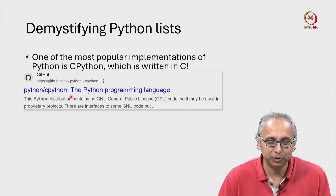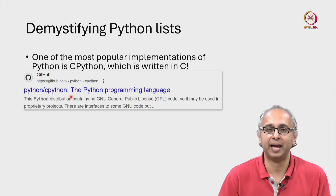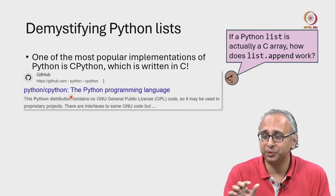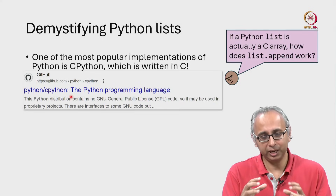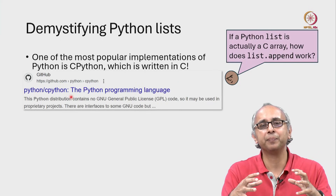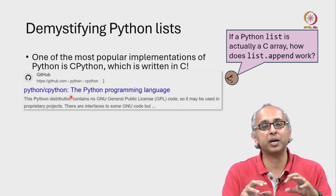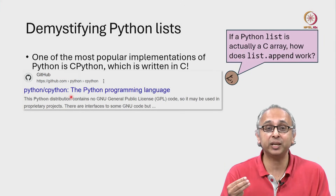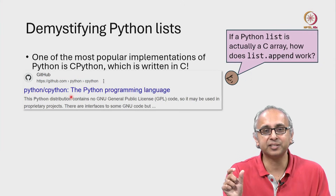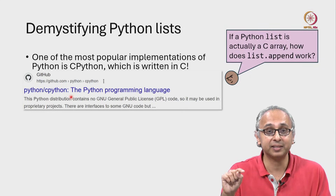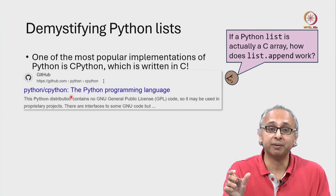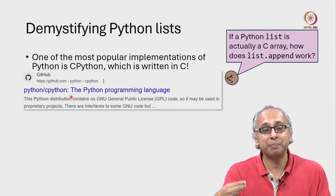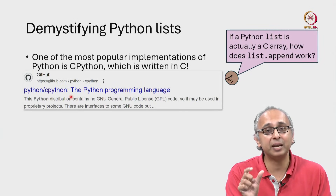Our friend is deeply curious about one particular aspect. It turns out Python lists are actually implemented internally using arrays. So our friend wants to know: if a list is actually just an array, how does list.append work where you can dynamically add one more item? We've seen there are three ways memory can be allocated for an array: a fixed-size array where the size is determined at compile time, a variable-length array with a fixed size determined at run time, or dynamically allocated on the heap — and that third option can grow.